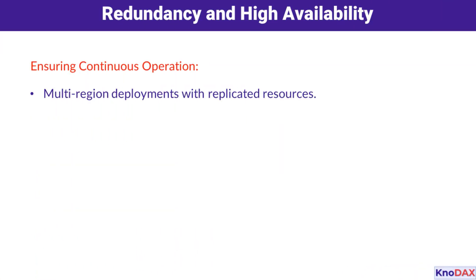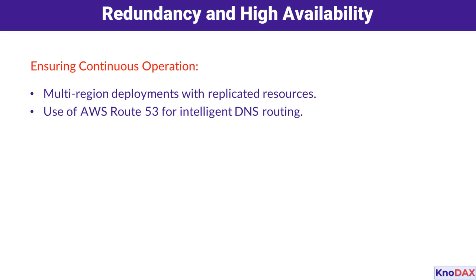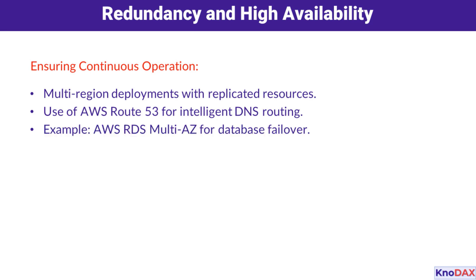Now let's focus on redundancy and high availability. These are your safeguards against failures and outages. Deploying resources across multiple AWS availability zones or regions ensures continuous operations. For example, Route 53 intelligently routes users to the healthiest endpoints, while AWS RDS Multi-AZ setups automatically switch to standby replicas during failures. This kind of planning minimizes disruptions and enhances user experience.